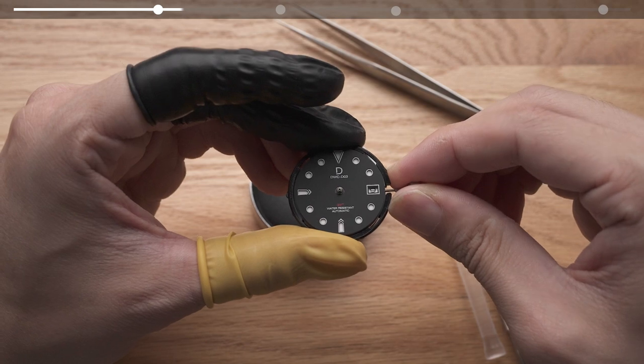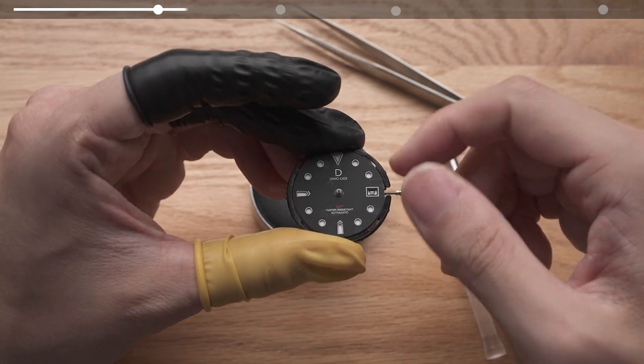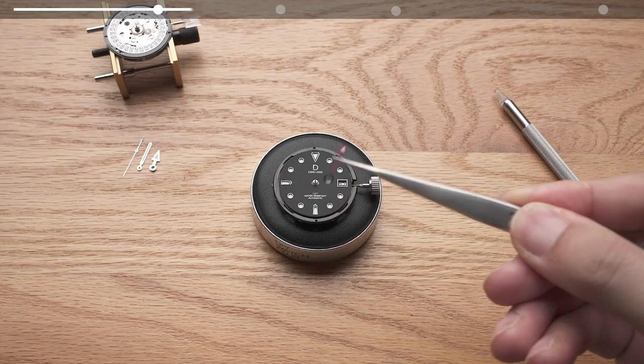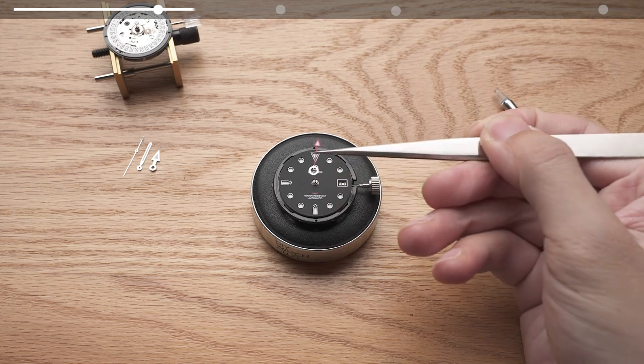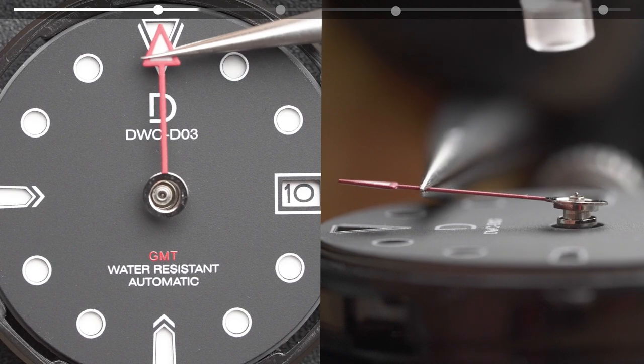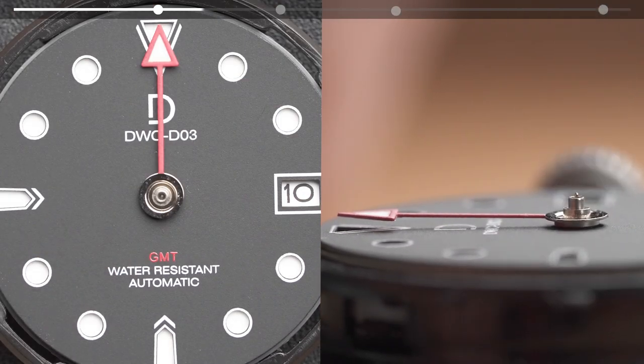Pull the crown all the way out to the time setting position and adjust the time forward until the date transitions. Once the date ring completes its jump, we install the GMT hand pointing it sharply at 12 o'clock. For all hand installations, we loosely attach them first so we can check the alignment before setting the hands.